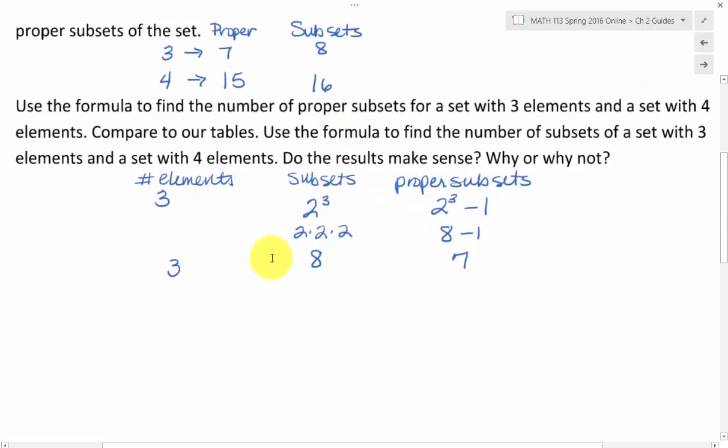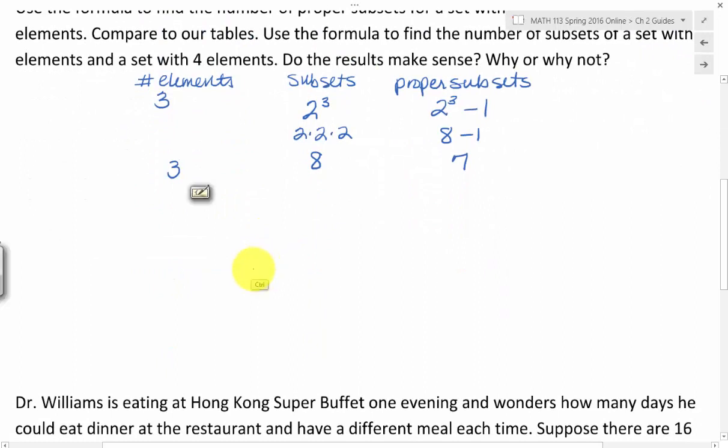Let's try it for four and see if it works for that as well. So if we have four elements in our set, then we would do two to the fourth. And two to the fourth is just going to be another two multiplied on to what we had before.